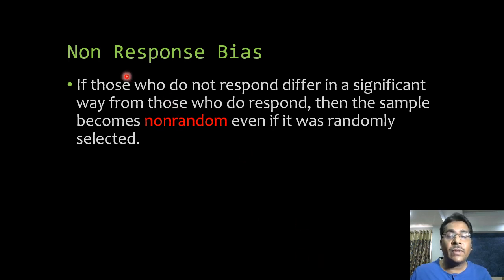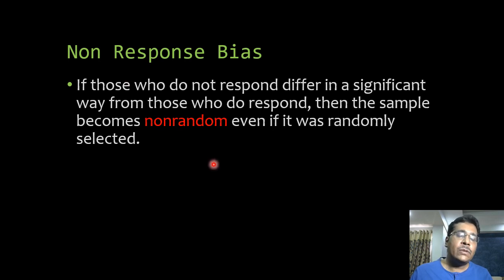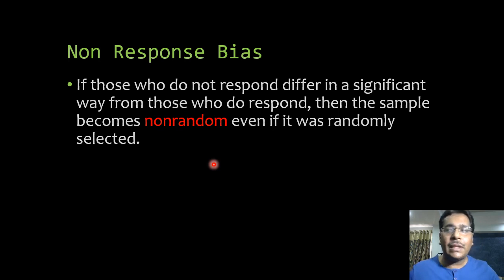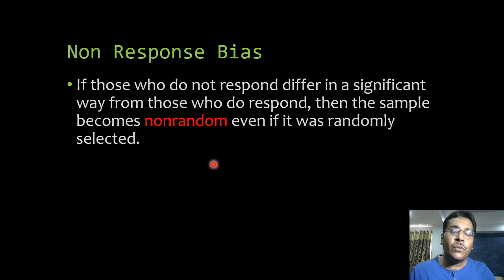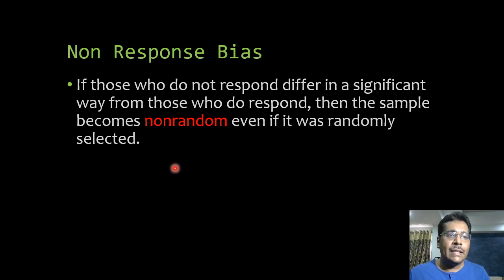One major problem with probability sampling and survey research is non-response bias — when people answer 'can't say,' 'don't know,' or don't answer at all. Although sampling is random, we don't know which questions or which people have not responded, and the randomness is lost. Non-response bias is therefore an important thing to consider in survey research.